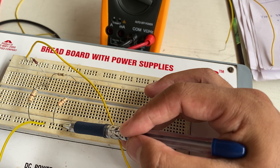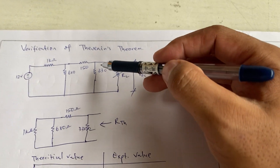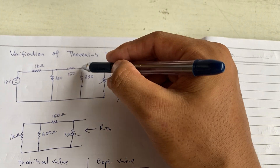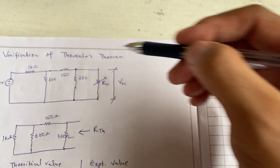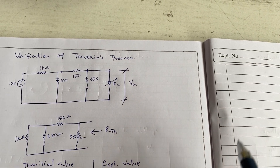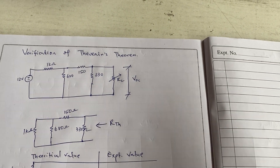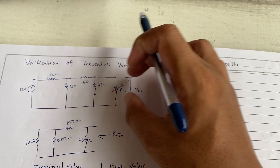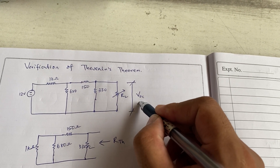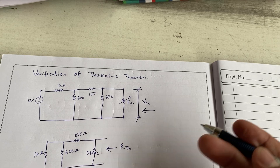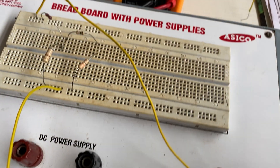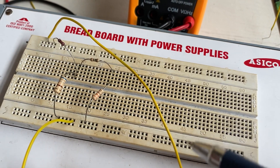We should have RL, the load resistor, connected from this node to this node. As per the circuit diagram, it is connected in parallel with the 330Ω from this node to this node. But while calculating Thevenin's theorem, we should remove RL and find the VOC from this side — that is the reason why we are not connecting RL here.